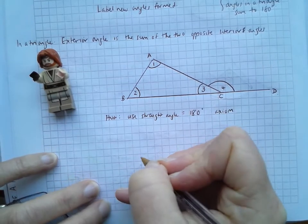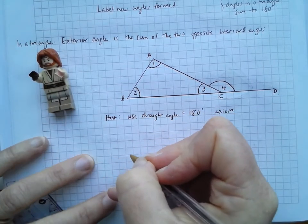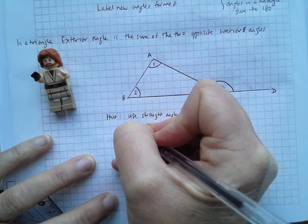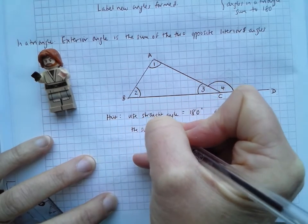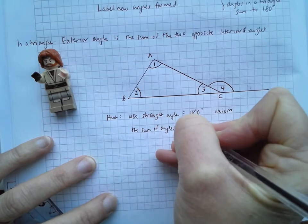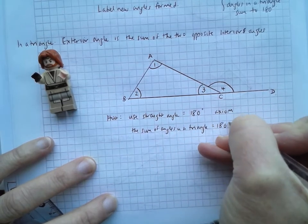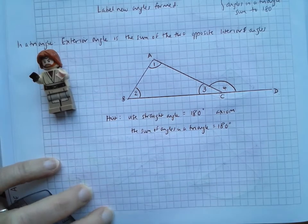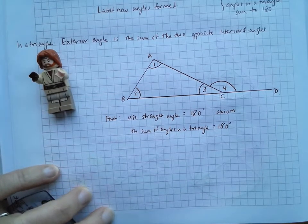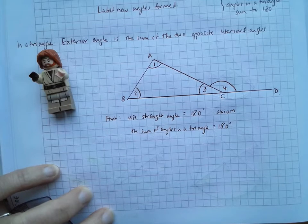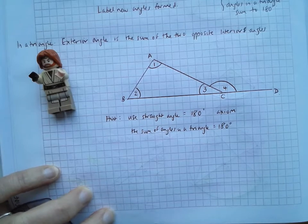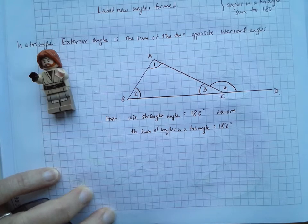And then we're going to use the theorem we did yesterday, which is that the sum of angles in a triangle equals 180 degrees. So it's a bit weird in that with theorems, we can use the previous theorem as an axiom. So once we've proved something, we can use that proof and just state it as if we knew it was true all along.